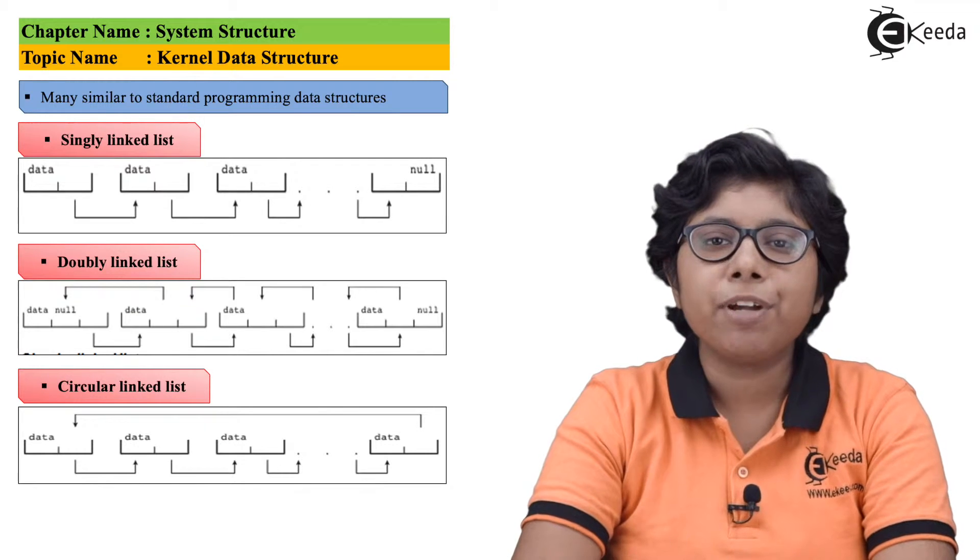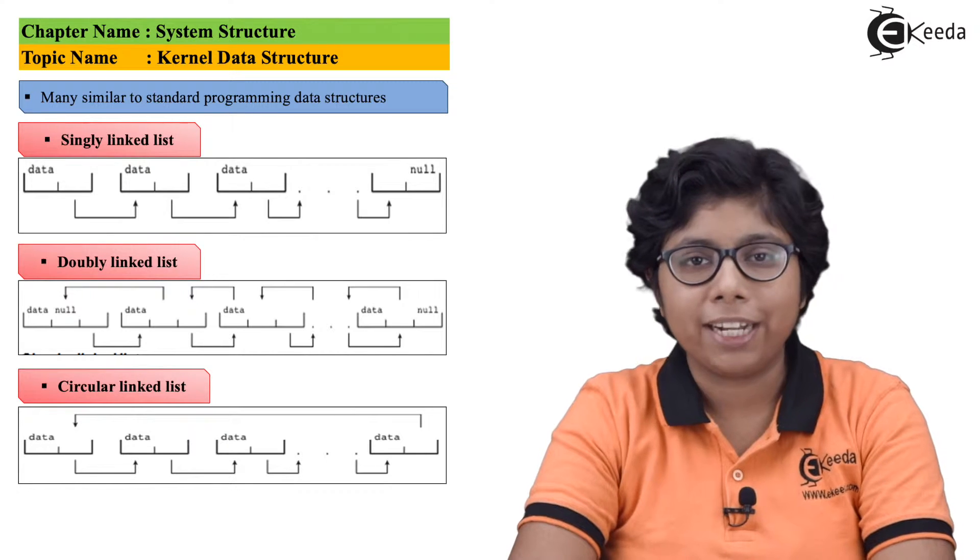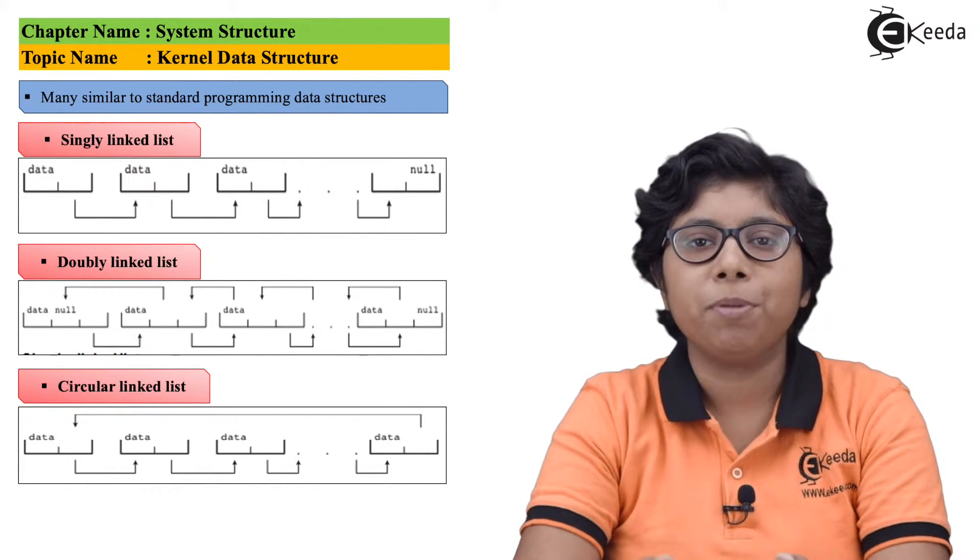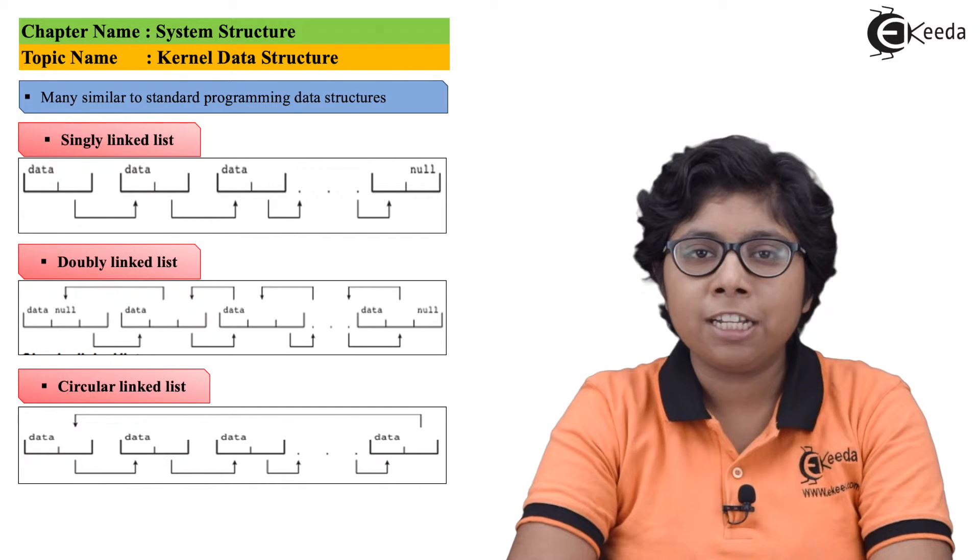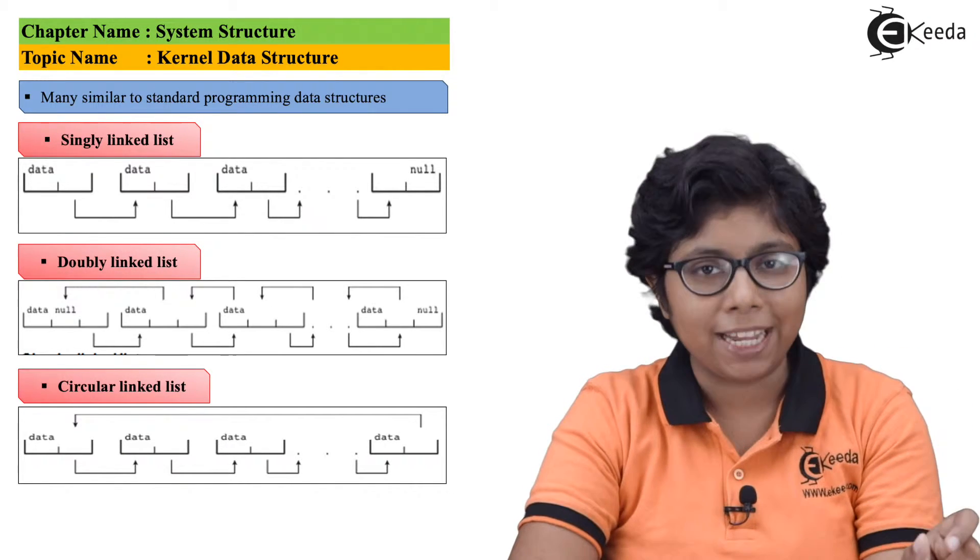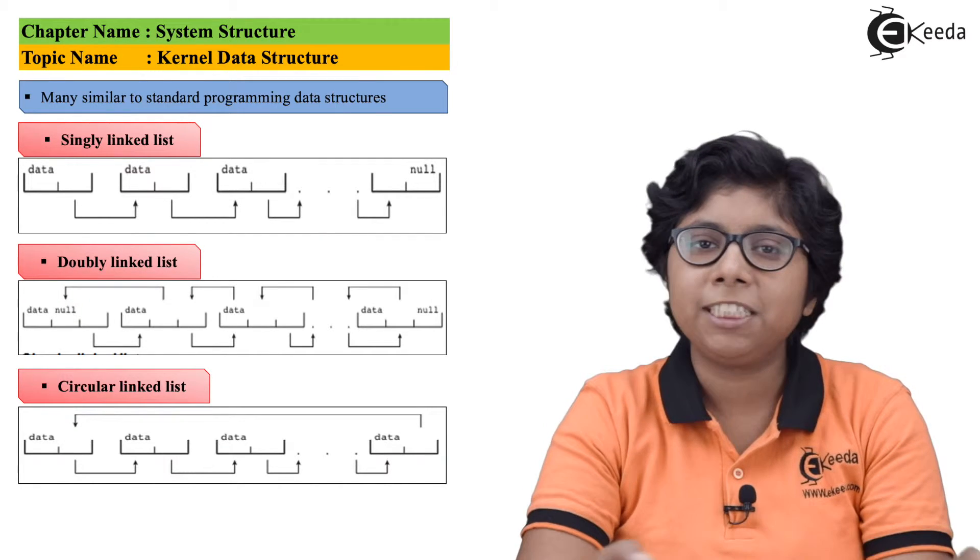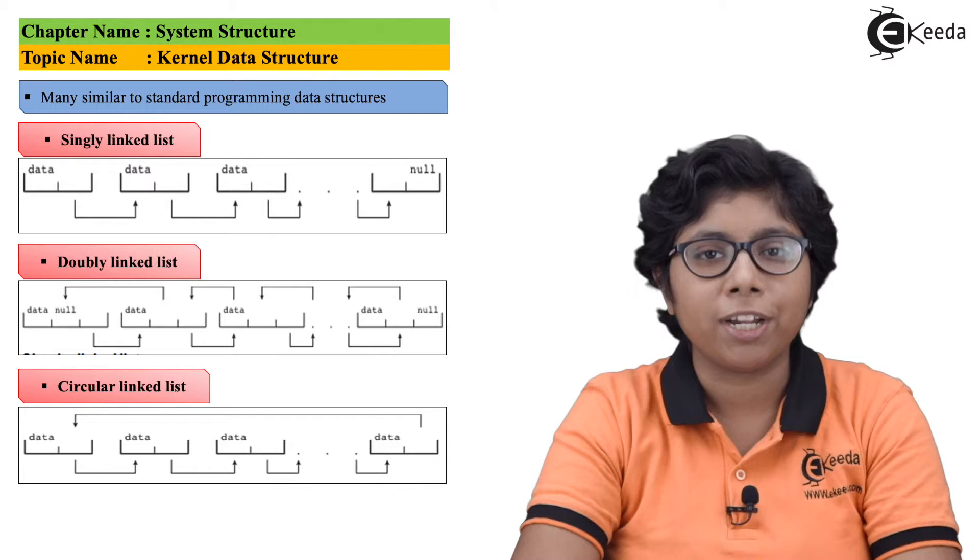Array is a sequential data structure where we can access the element directly. We can fetch the element directly from an array. The array element is addressed as item number times item size. If an element is containing more than one byte, then multiple bytes can be allocated to one element.